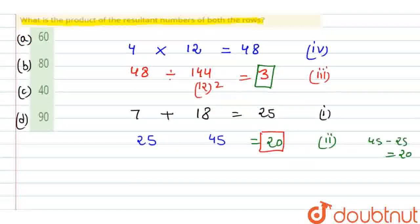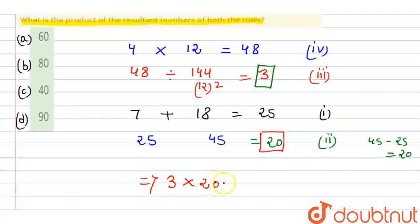Now we had to find the product of both rows' results. That means three into twenty. So that is equal to sixty. This is our required answer. I hope you understood. Option A is correct, that is sixty. Thank you.